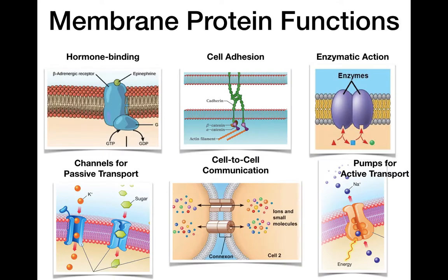Here are some of the different functions of membrane proteins. We have ones important for binding hormones — here's an integral amphipathic protein as a receptor for epinephrine. We can see how cells can adhere to each other using different proteins that help them attach. Many enzymes, especially in topic 2, are embedded in the membrane to keep reactions localized. They can be channels for transport, both passive transport and active transport pumps to move things in and out of the cell. Cells communicating between each other can also happen through membrane proteins.